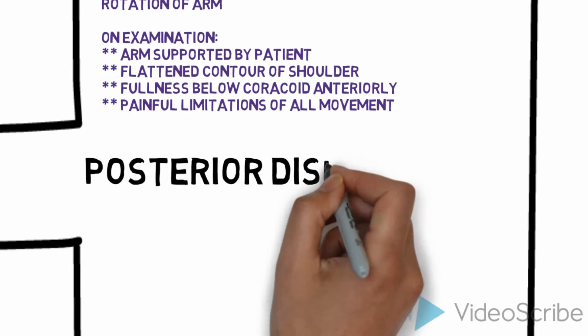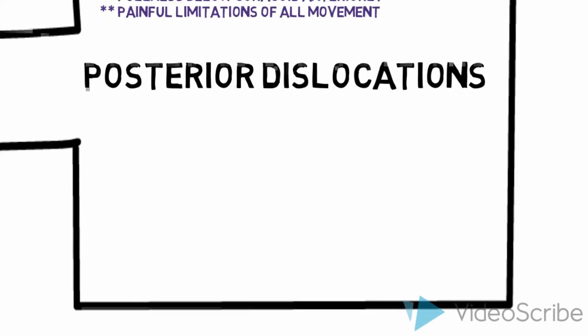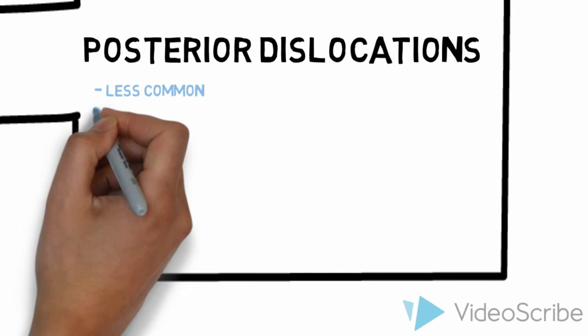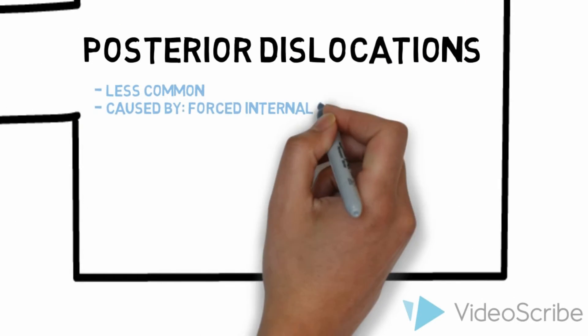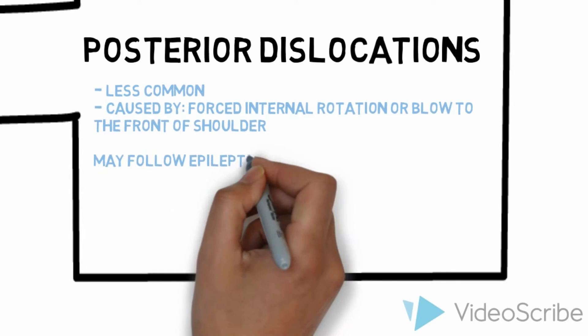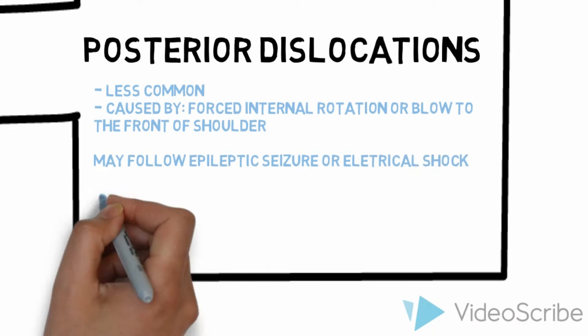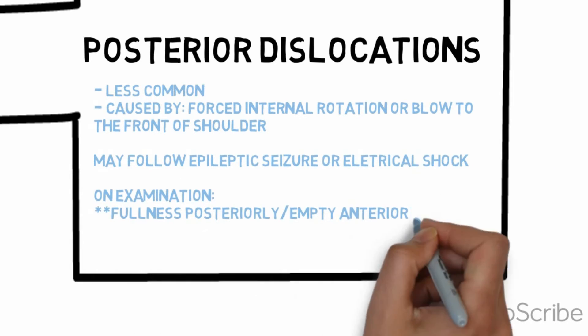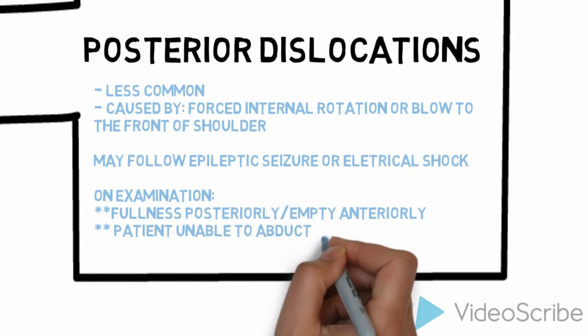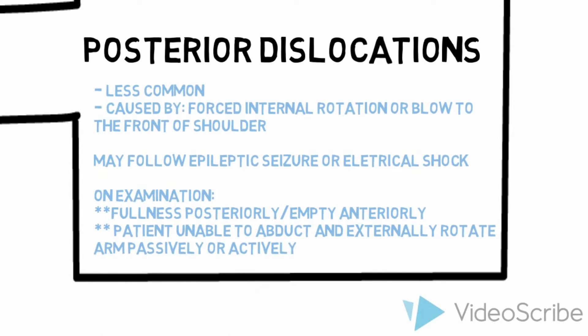Posterior dislocations are less common and more commonly missed. This is caused by forced internal rotation or a blow to the front of the shoulder. They may be seen following seizures or episodes of electrocution due to muscular contraction. On examination, fullness posteriorly or an emptiness anteriorly may be seen, and the patient could be unable to abduct or externally rotate their arm.